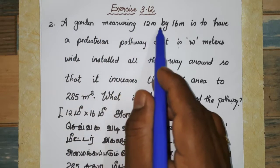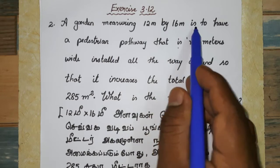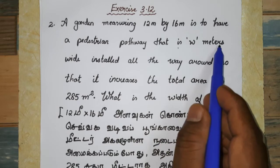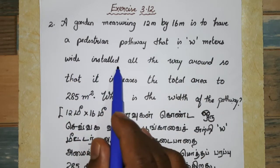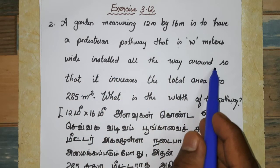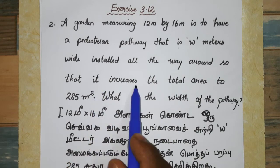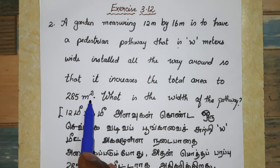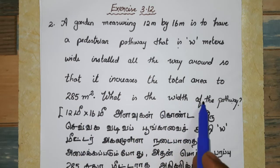A garden measuring 12 meters by 16 meters is to have a pedestrian pathway that is W meters wide, installed all the way around, so that it increases the total area to 285 meters square. What is the width of the pathway?